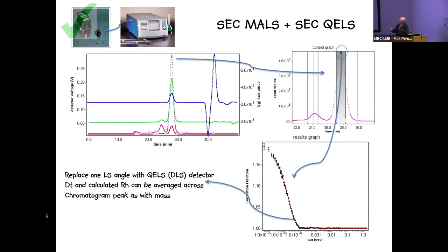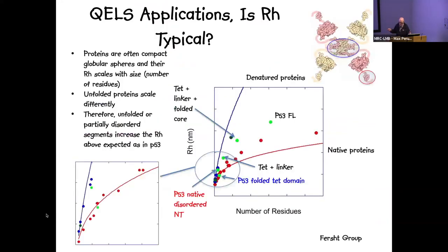Just as with static light scattering, we can couple DLS to size exclusion chromatography. We replace one of our 18 static light scattering detector angles with a dynamic light scattering detector, giving an additional chromatogram trace alongside refractive index, UV, and static light scattering. From every single point within the chromatogram where we have sufficient signal, we can get an autocorrelation function and thus the hydrodynamic radius.